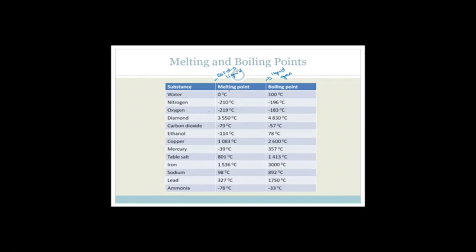So it goes from solid to liquid, or from a liquid to a gas. You can see that you've got water, nitrogen, oxygen, diamond, all the different things. Note the interesting things: we've got diamond here, which is at 3,550 degrees Celsius — the temperature at which it goes from a solid to a liquid — and then from 4,830 degrees, it goes from a liquid to a gas. So we need huge amounts of energy before you can actually get it to change phase. Whereas nitrogen is changing from solid to liquid at minus 210 degrees Celsius, and then from a liquid to gas at minus 196 degrees Celsius. So it is gas at room temperature. This is really just to give you a reference table to show you that the melting points and boiling points change quite vastly depending on what the substances are.